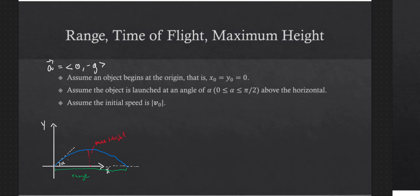It's been launched at an angle of alpha, and we'll assume alpha is between 0 and pi over 2. If it's not, we can switch around our axes and consider it like that. So it's safe to assume that we're being launched at an angle of alpha between 0 and pi over 2 — that's above the horizontal.